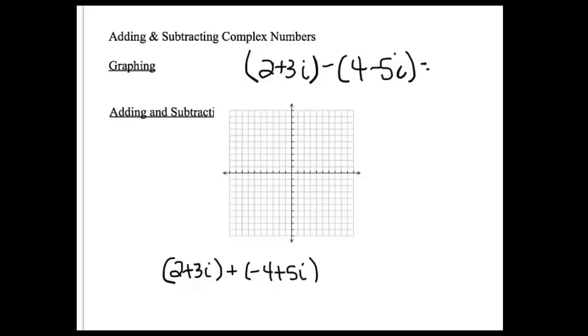So here's 2 plus 3i. And from there, I'm going to add negative 4 plus 5i. So from this point, I'm going to go left 4, 1, 2, 3, 4, up 5, 1, 2, 3, 4.